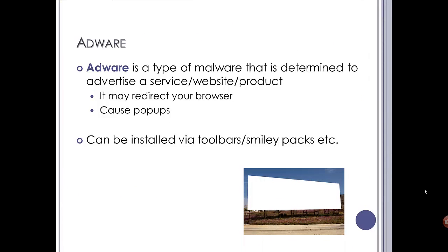Adware is probably the easiest to describe. It's just a type of malware that tries to advertise a service, website, or product. Now, this may be harmless, but on the other hand it may be advertising inappropriate material. It may redirect your browser, it may cause pop-ups such as saying your registry is corrupt — please install this software. It can be installed via toolbar or smiley pack. It's usually free kind of software where you don't really have a choice.